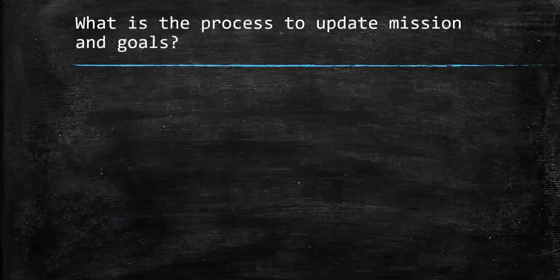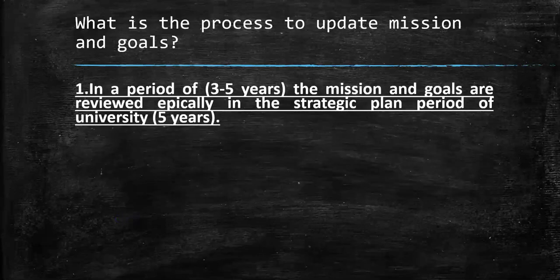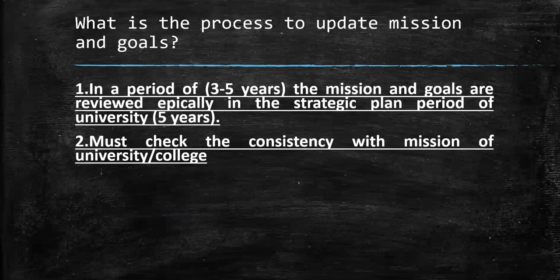What is the process to update mission and goals? In a period of three to five years — mainly in engineering you need five years. Every five years, after the graduation of the first cohort, or maybe four years for other programs, you need to update your mission and goals if needed. This period is also based on the strategic plan period of the university, which is also five years. You must check the consistency with the mission of the university and college.